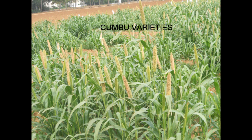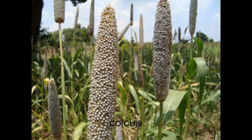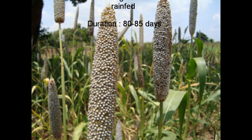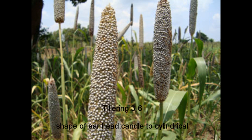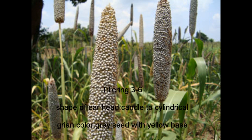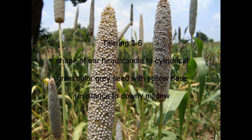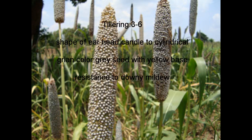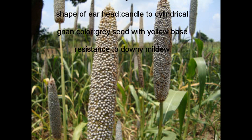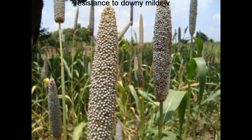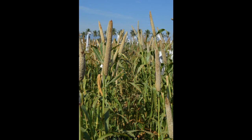Kumbu Variety COCU9 is a selection from ICMV93752. It is suitable for both irrigated and rain-fed conditions. The duration is about 80 to 85 days. It has 3 to 6 tillers. The shape of the ear head is candle to cylindrical. The grain color of COCU9 is grey with a yellow base. It is resistant to downy mildew.